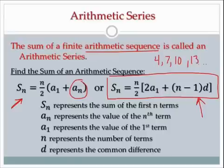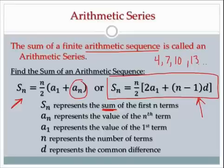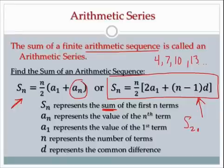The only variable that's new here is S sub n. S sub n is the sum of the first n terms — depending on what kind of series you're looking for. If it's a 20-term sequence and you want to add them up, you want to find S sub 20. If you want to find the sum of the first 100 terms, you'd find S sub 100.